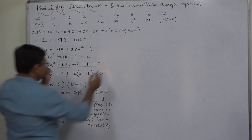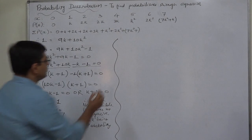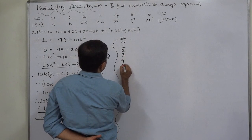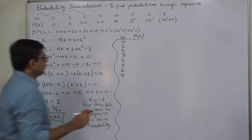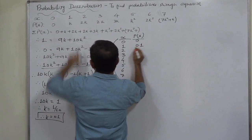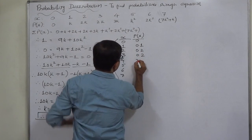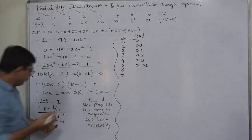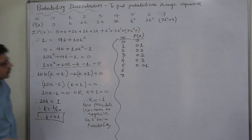Now we have the value of K. We can form the probability distribution table with X taking values 0, 1, 2, 3, 4, 5, 6, and 7. P(X) for X=0 is 0; for X=1, K equals 0.1; for X=2, 2K equals 0.2; for X=3, 2K equals 0.2; for X=4, 3K equals 0.3; for X=5, K squared equals 0.01, since the square of 0.1 is 0.01.